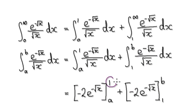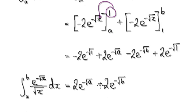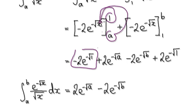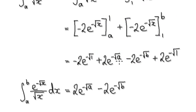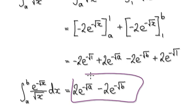Now it's just a matter of substituting in the limits. When you put 1 into here, that gives you this. Put A into here — that gives you this. Put B into here — that gives you this. These two terms are exactly the same, so they cancel each other out, giving you this.